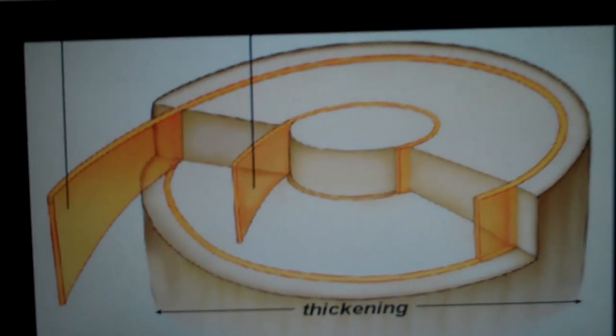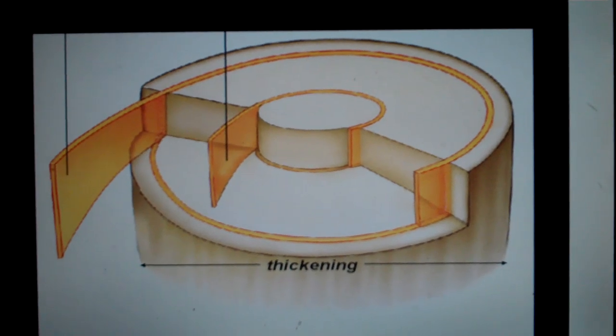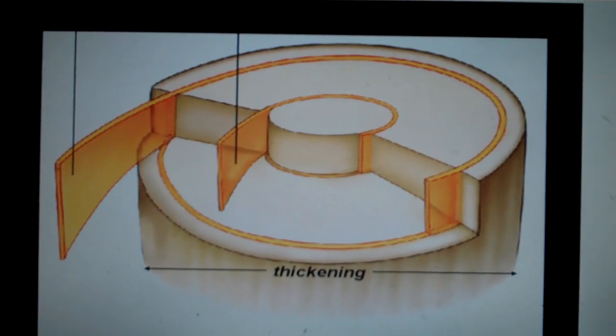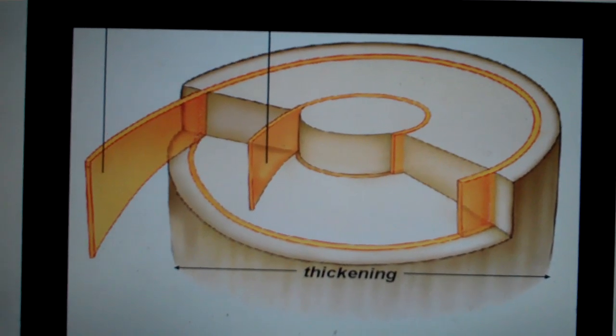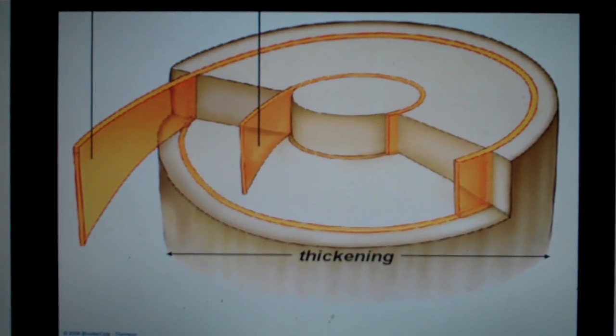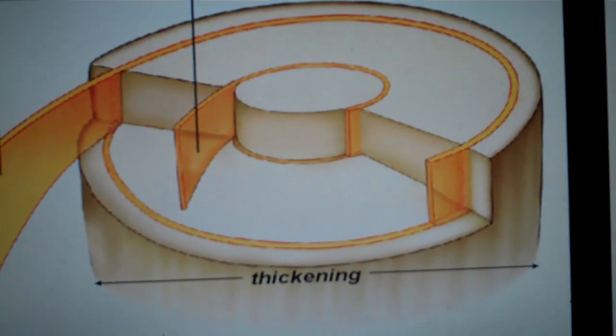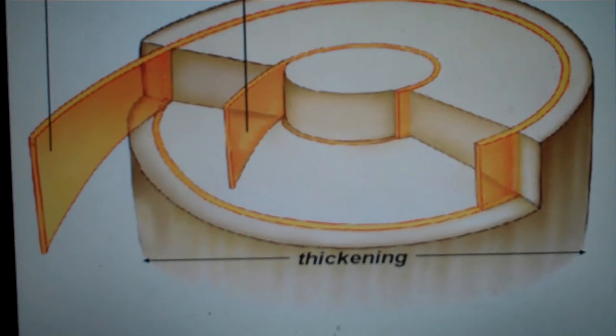This section covers secondary growth in plants. We'll be focusing on woody plants such as trees. There are two types of lateral meristems that increase the plant's width or girth.